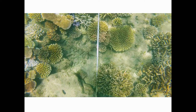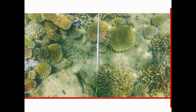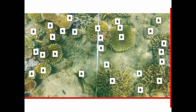Here's our first image. You can see lots of different branching corals — in fact, most of the corals in this image are branching corals. We only count corals if they overlap on the right side or bottom of the image; corals overlapping the top or left side are not counted. In this image we have 28 branching corals marked with the letter B, two soft corals marked S, and one other stony coral — giving us 28 branching, two soft, and one other hard coral.